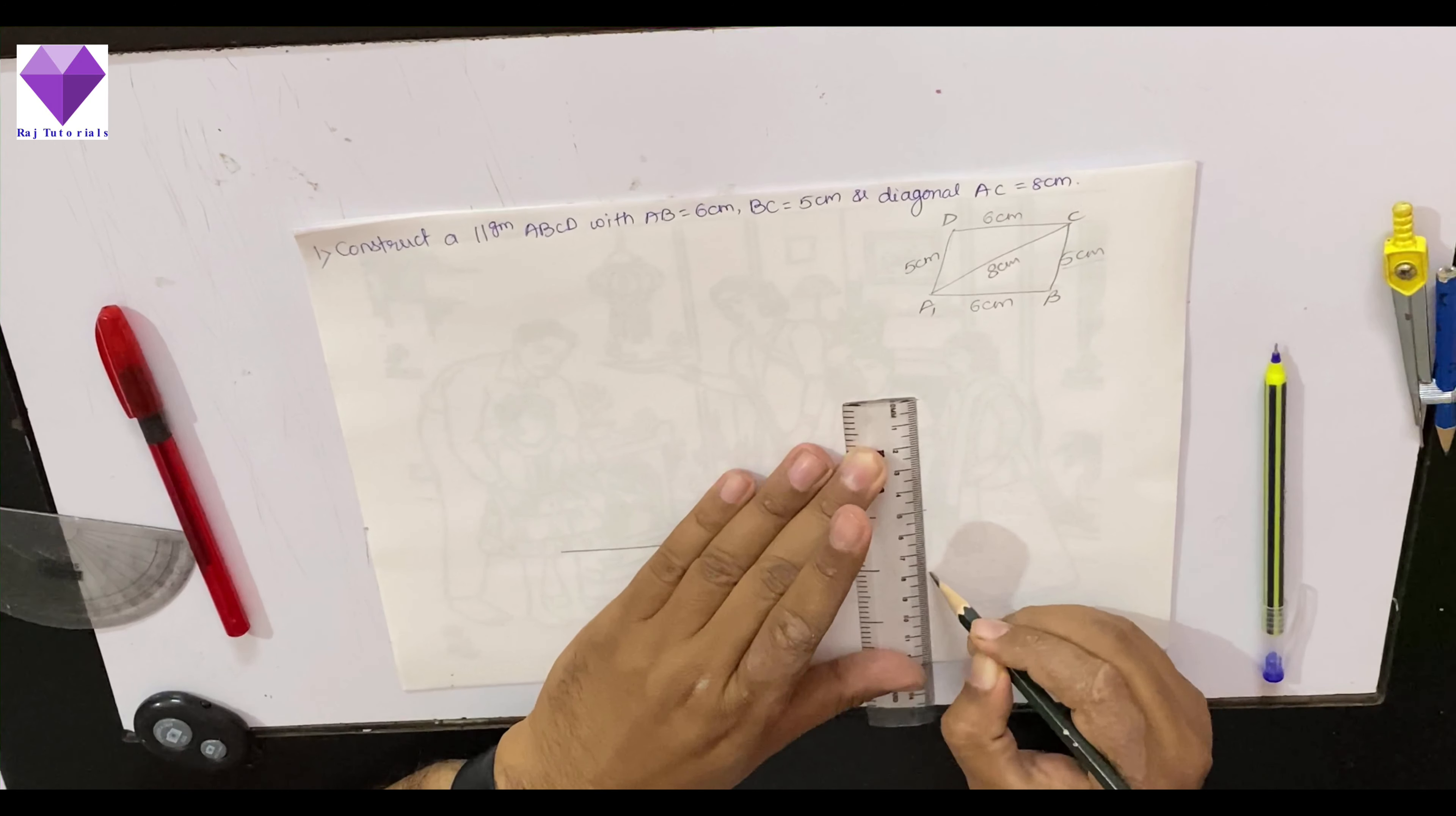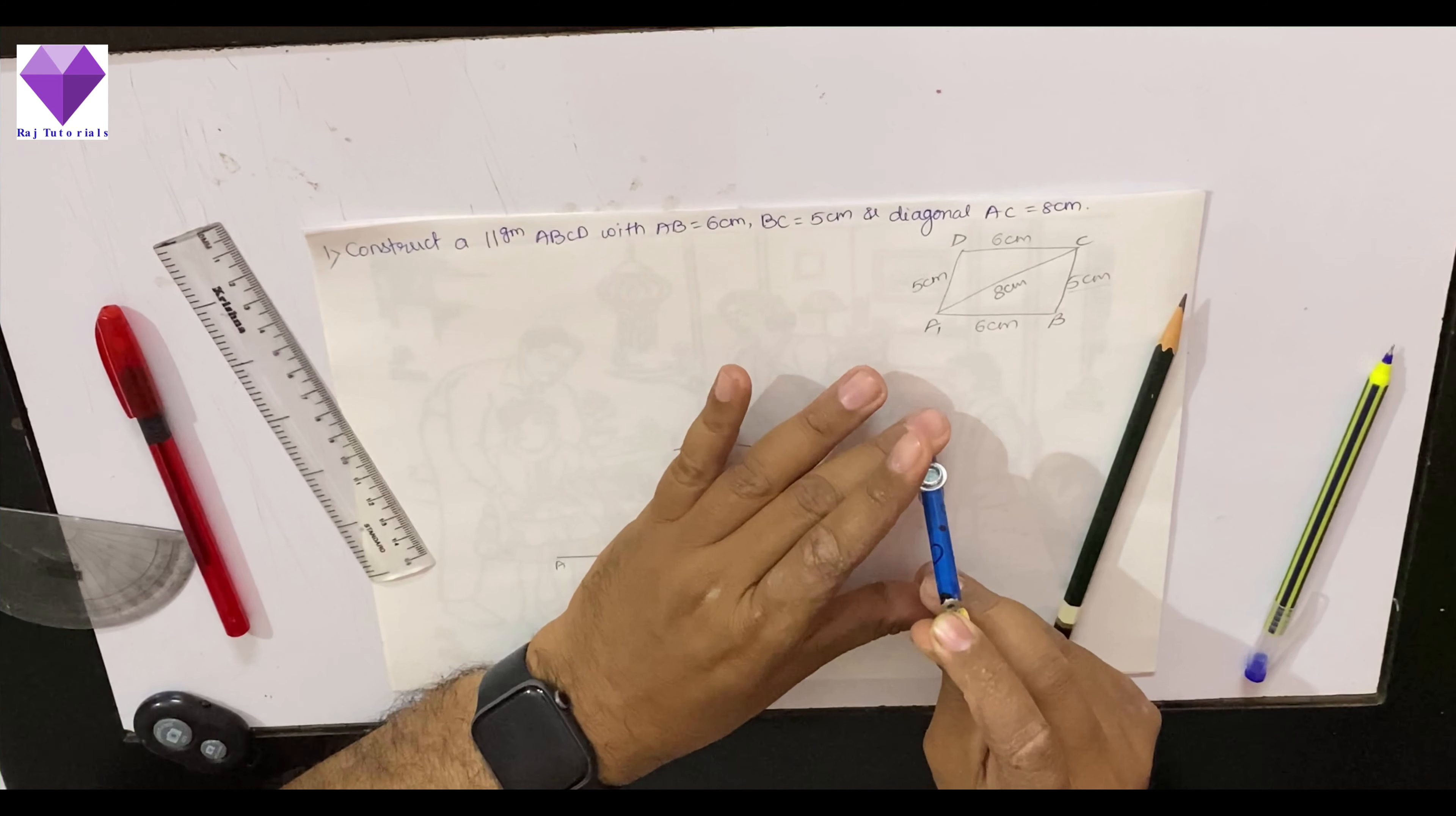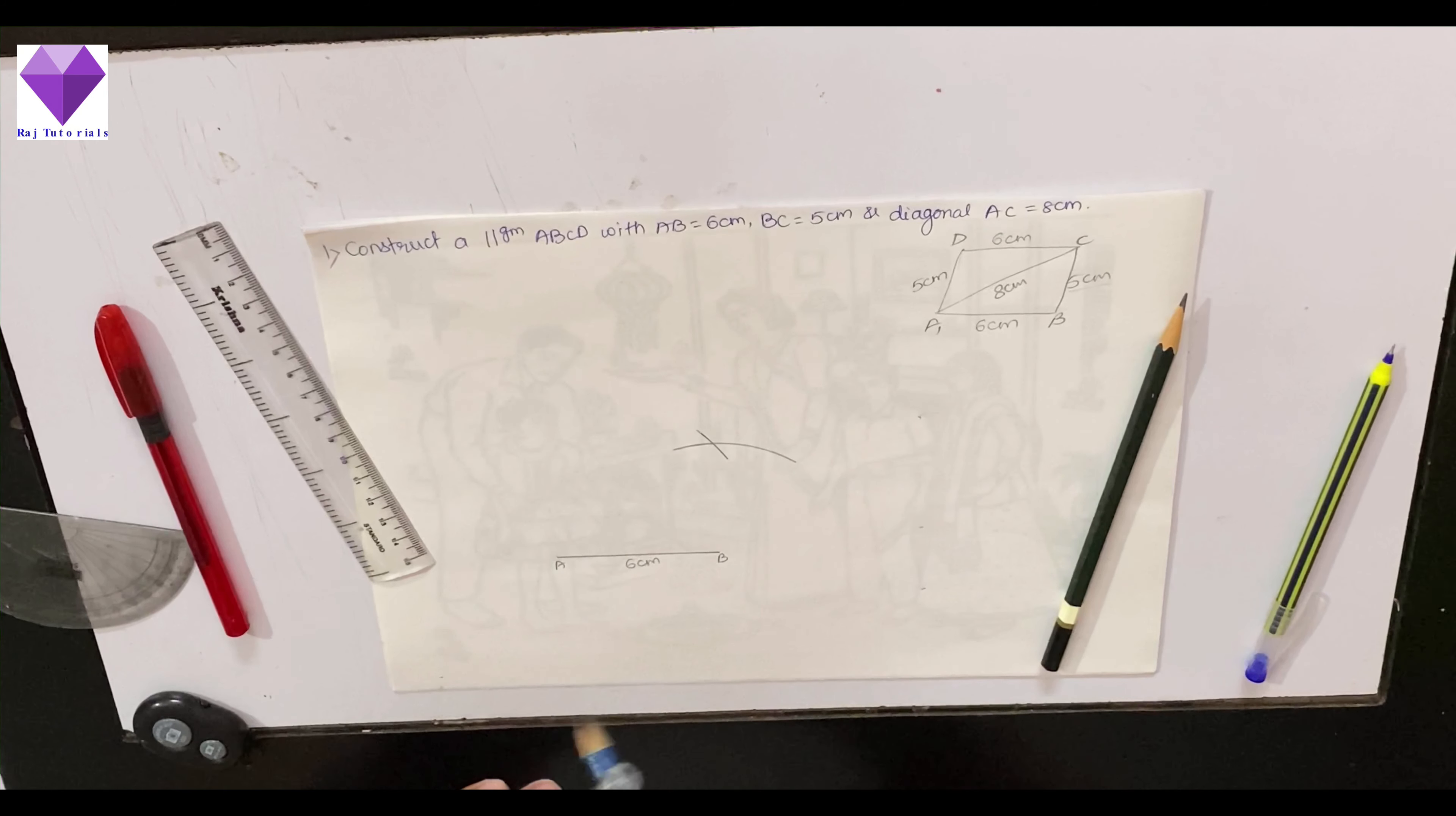With 8 cm in the compass and A as the point, I will mark an 8 cm arc. I got the C point now.